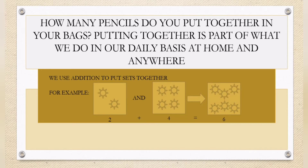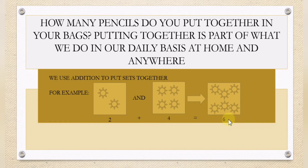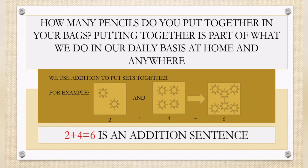For example, here we have 2 sons. In the second box, we have 4 sons. If we put them together, we will have the result of 6 sons. So, 2 plus 4 sons is equals to 6 sons. 2 plus 4 equals 6 is an addition sentence.